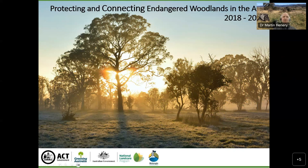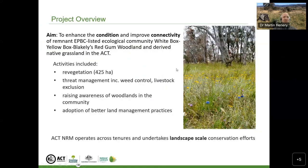The main aim of this project was to enhance the condition and improve connectivity in remnant box gum woodland — the EPBC listed ecological community of white box, yellow box, Blakely's red gum woodland and derived native grassland in the ACT. This project included numerous activities.